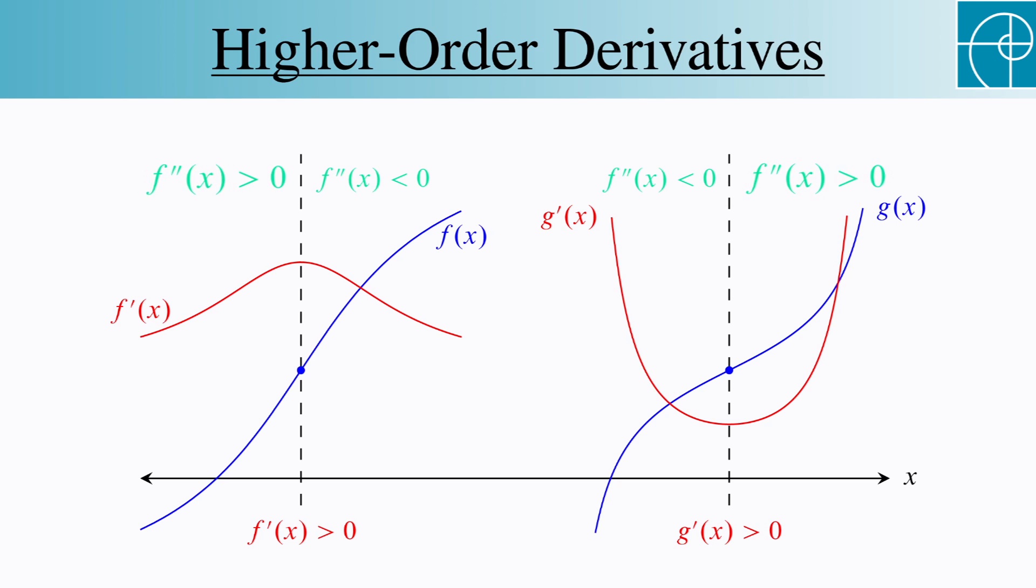Notice that the places where it's positive correspond to places where the original function is concave up, and places where it's negative correspond to places where the original function is concave down.